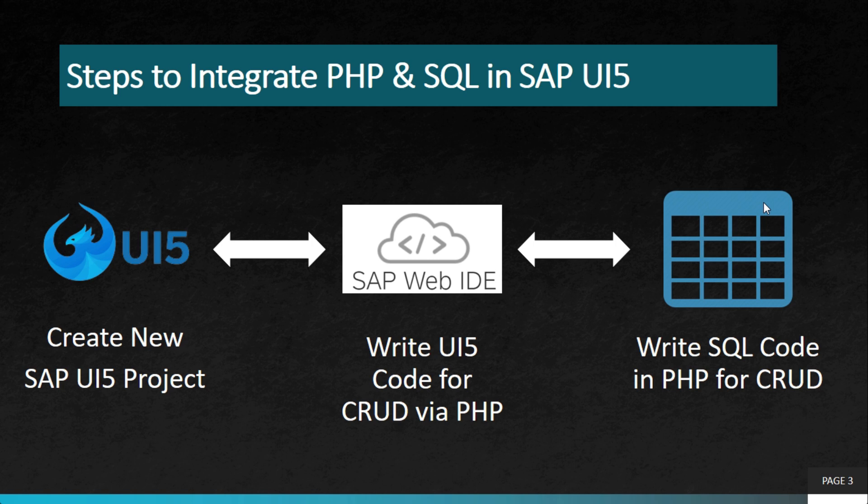The steps are very simple. You need to create a simple UI5 project, and inside that you write CRUD operations for whatever you want. You can create a table, add forms, and perform create, update, and delete operations on top of that. Within the functions where you are writing those codes, you need to add PHP calls — PHP will be called by an API.